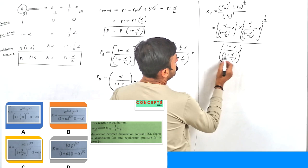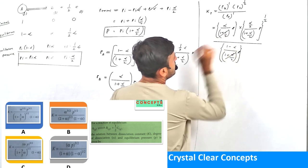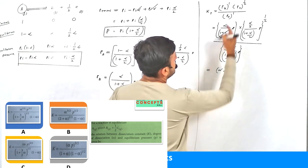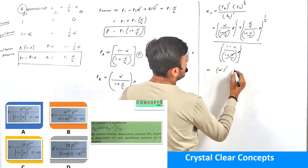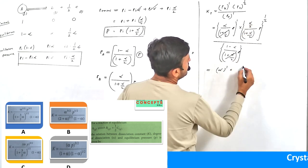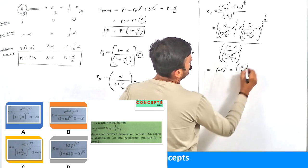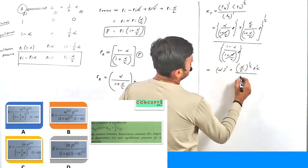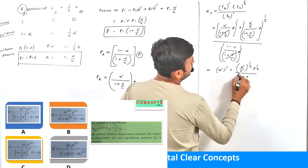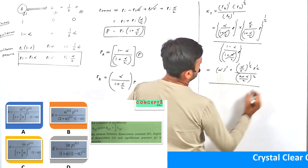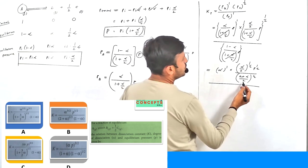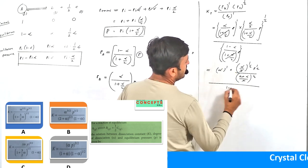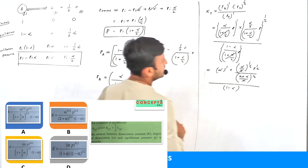Looking at the (1 + α/2) terms, they cancel out across numerator and denominator. After cancellation, what remains is: α raised to 1, multiplied by (α/2) raised to 1/2, multiplied by P raised to 1/2, divided by (2 + α/2) raised to 1/2. The 2s in the denominator cancel as well, and we also have (1 - α) in the denominator.